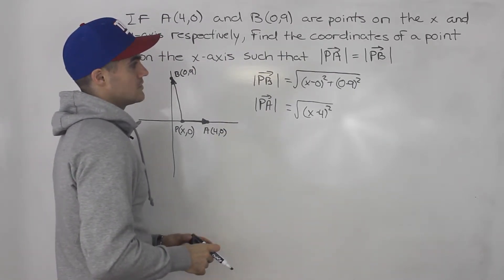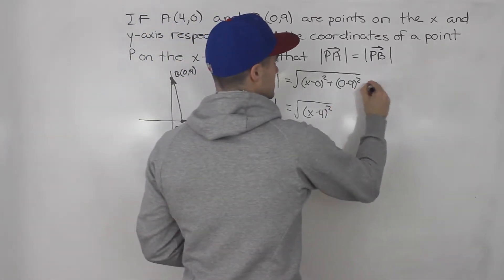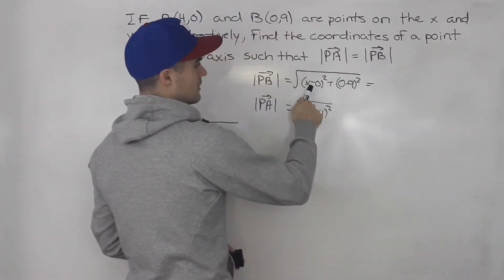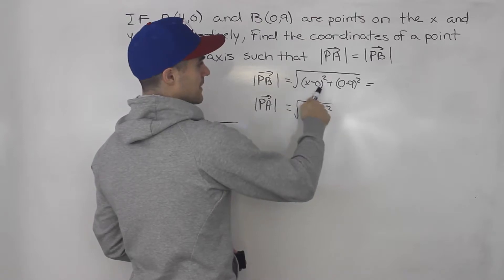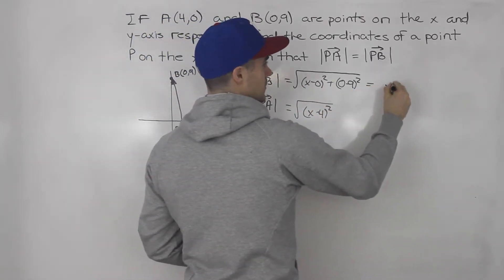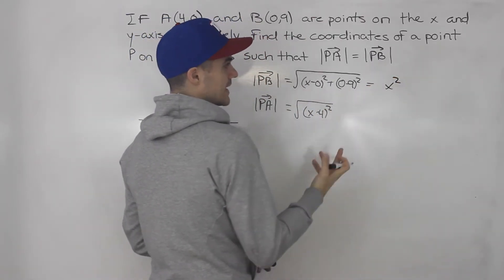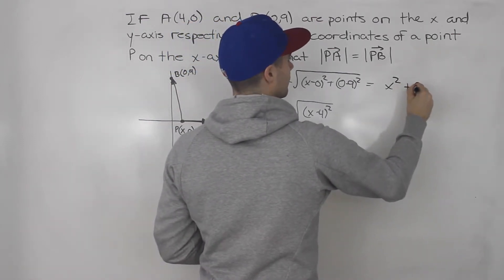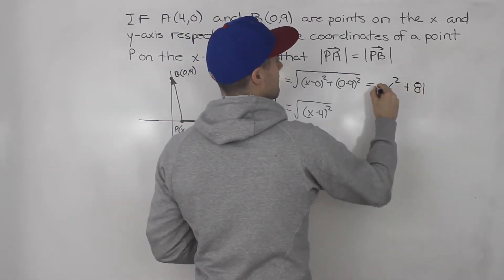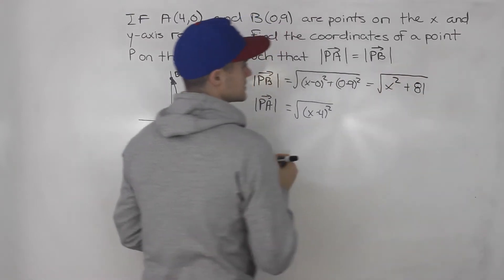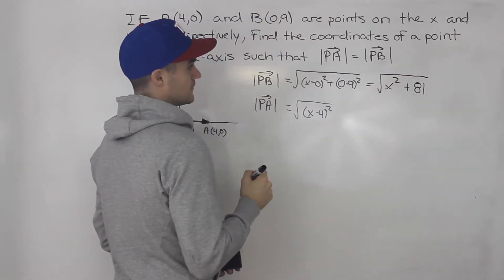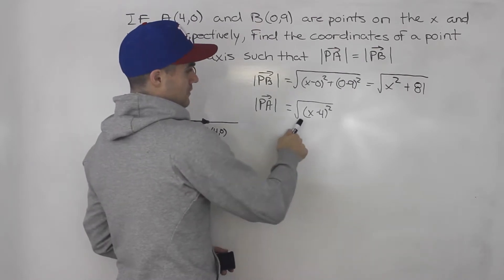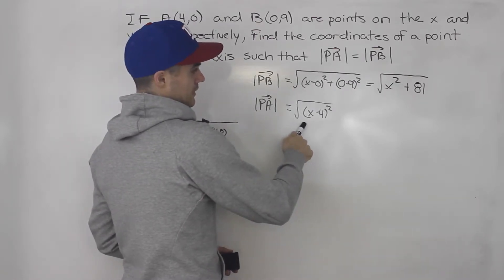Now notice that we can simplify all of this. So (x - 0)² is just x². 0 minus 9 is -9. Negative 9 squared is positive 81. Like that. And this is just going to be square rooted.